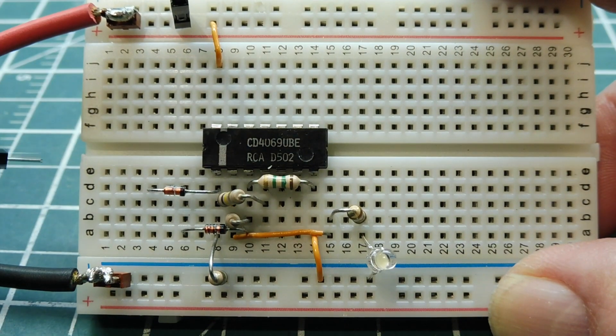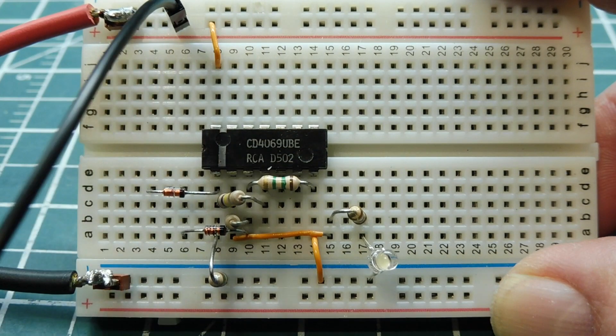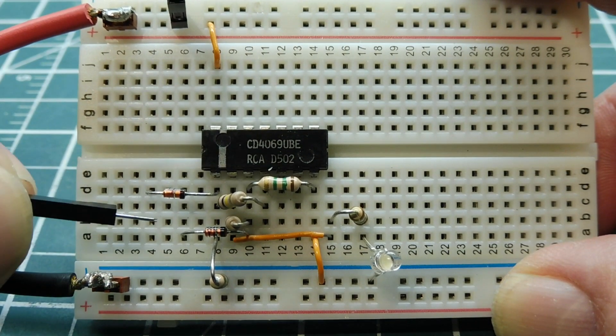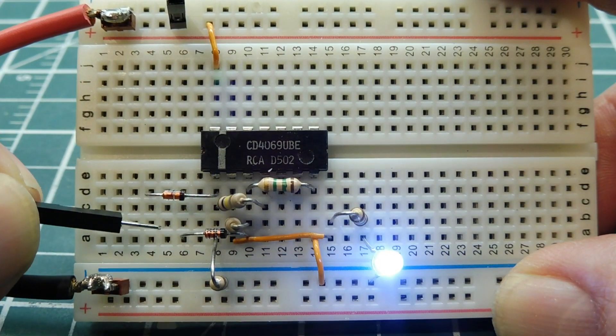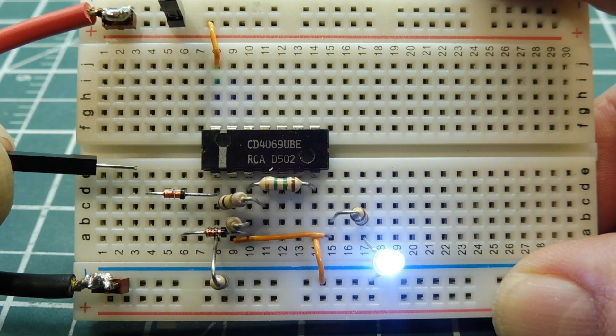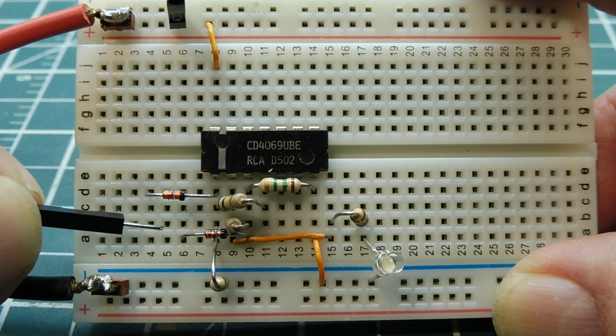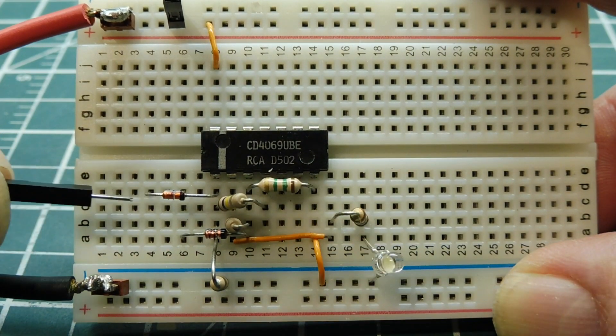Here's my SR flip-flop using two inverters and I have a jumper wire connected to VCC. Now if I pulse my set line with a positive going pulse, you see Q output goes high and if I pulse my reset line with a positive going pulse, Q goes low. So here's my set and reset pulses.